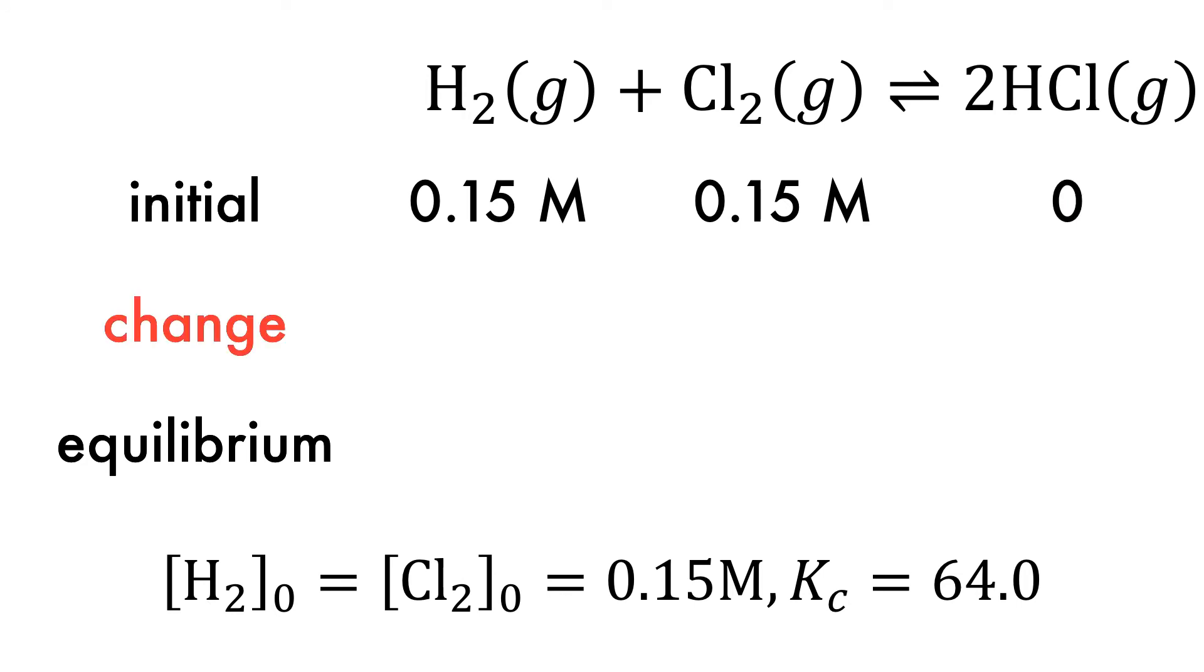The change for each of the substances will be different and stoichiometry must be considered. For every mole of reactant, 2 moles of product is formed. As the product is formed at twice the rate the reactants are used up, the change is plus 2x. The equilibrium is then the sum of initial and change, which gives the completed ICE box.